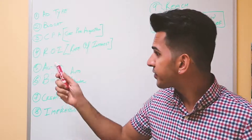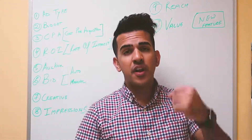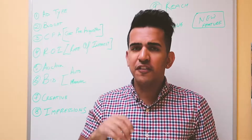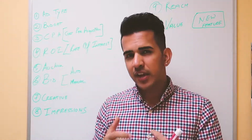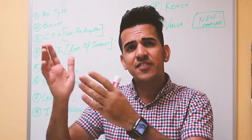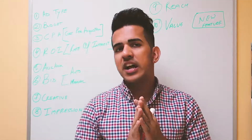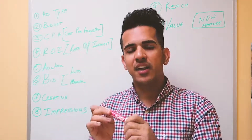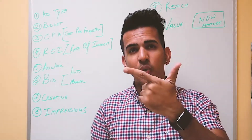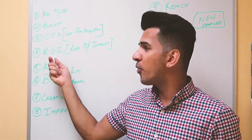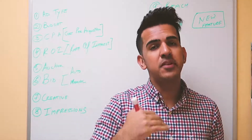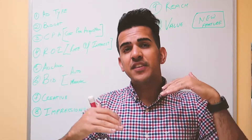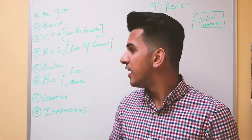Concept number four is ROI — return on investment. It's about how much money you get back. If I put in $10 and get $100 in sales, or put in $100 and get $700, or put in $20,000 and get $100,000 — that's ROI. CPA and ROI are very important because they frame your ad campaigns. Lower CPA means your ads are doing well; higher ROI means your ads are doing well.